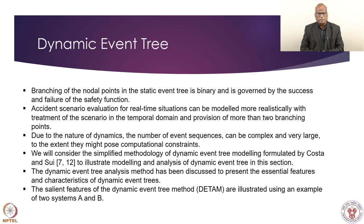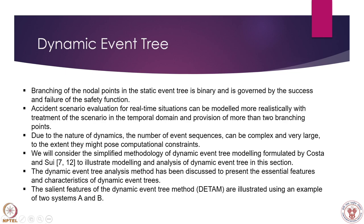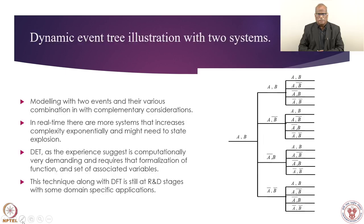Salient features of the dynamic event tree are given in this presentation. This illustration shows there are two events A and B and how they can be modeled. At the first level it is A·B, then at the second level it becomes A·B, A'·B, A·B', and A'·B'. Taking each node, we have designed it for four combinations since each event and its complement gives four scenarios: A·B, A'·B, A·B', and A'·B'.